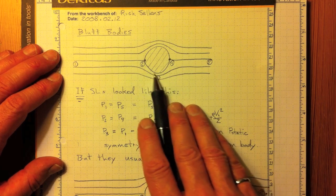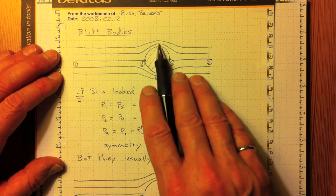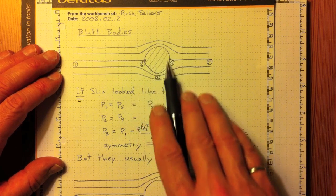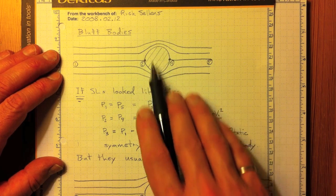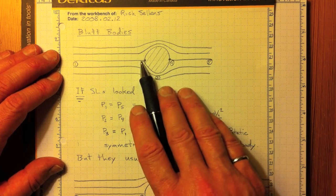and here the streamlines are closer together and it's going much faster. And the pressure here is actually lower than nominal atmospheric pressure. Likewise, the pressure up here is lower, and if the body is symmetric, it's lower in exactly the same way, so there's no net lift force.